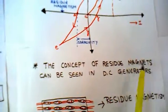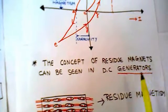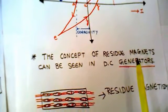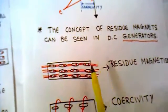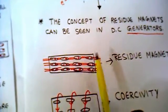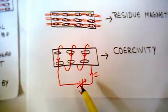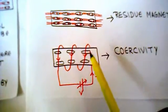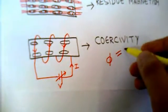The concept of residue magnetism can be seen in a DC generator — this is a place where you can apply this concept. In a DC generator, we always use the concept of residue magnetism because we do not want to excite the windings with an extra source. The grains are already aligned and you have switched off your power supply, yet there is still magnetism left. The coercive force is the extra force applied in the opposite direction to make the net flux equal to zero.